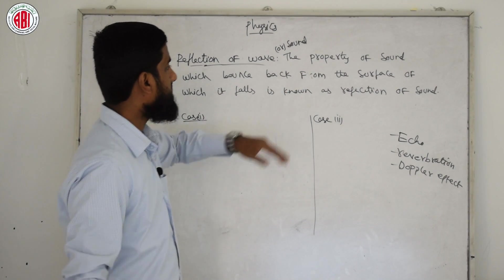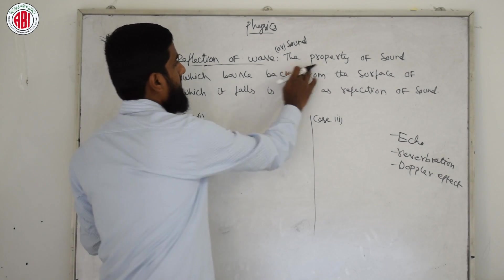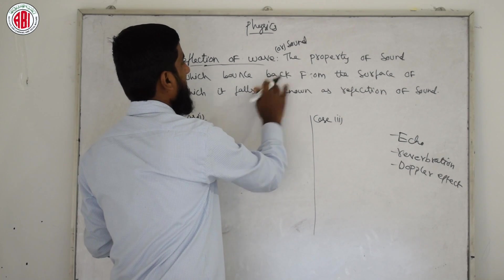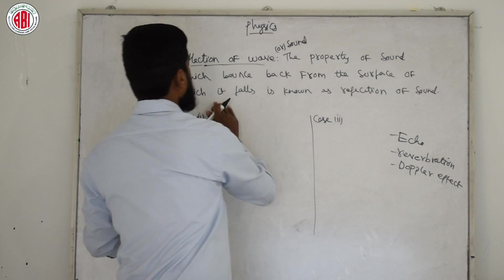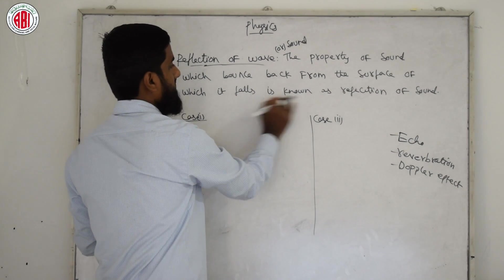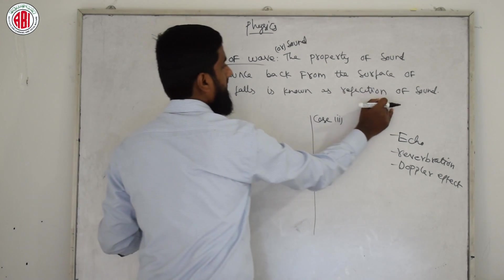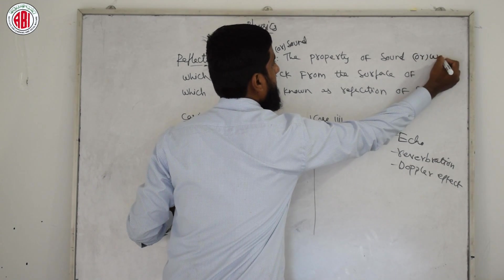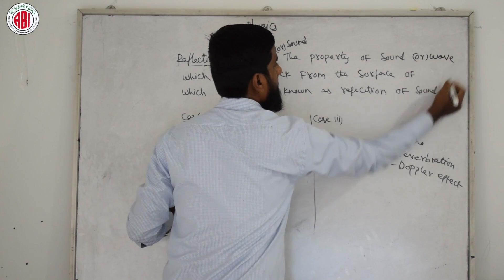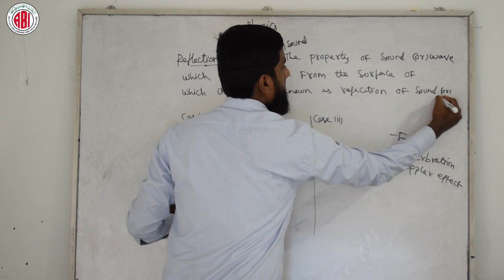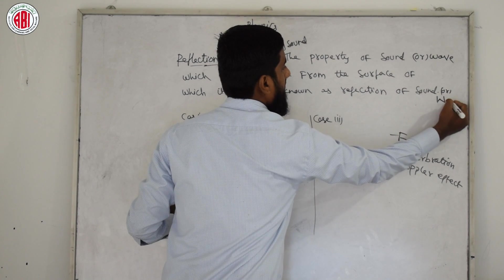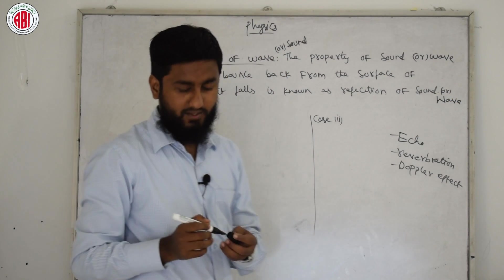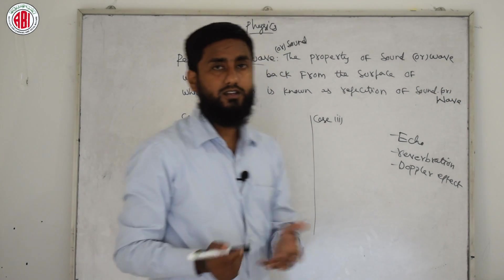Now look at the board. The definition written there is: the property of sound which bounces back from the surface on which it falls is known as reflection of sound. We can also call it reflection of wave.